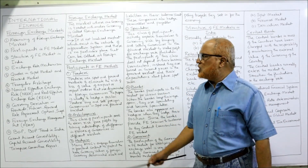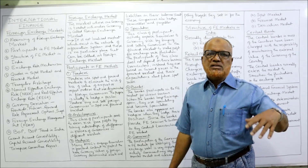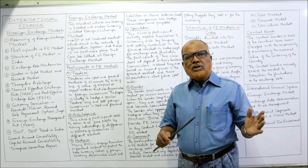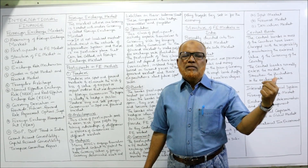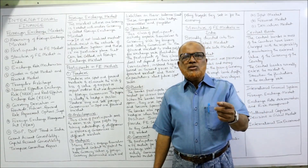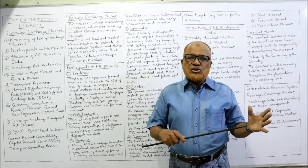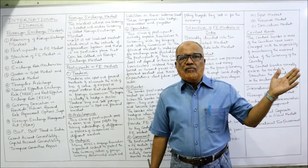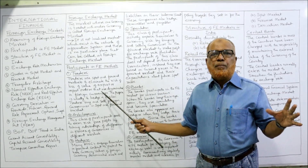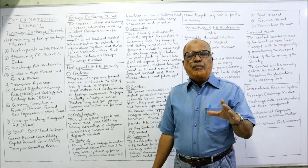The first participant in the foreign exchange market is the trader. Traders buy or sell foreign currency. For example, an Indian importer who purchases goods from an American firm must convert Indian rupees into dollars and make payment in dollars. Similarly, when an American firm purchases goods from an Indian trader, they must convert dollars into Indian rupees and make payment. These traders are the first participants in the foreign exchange market.